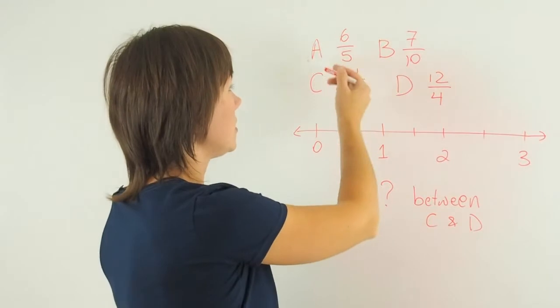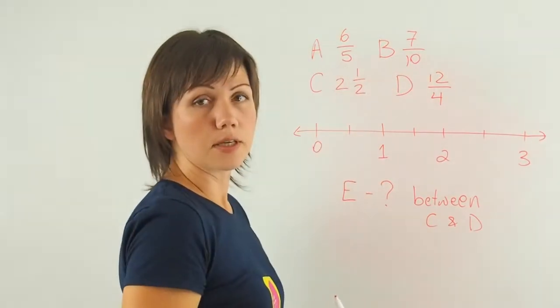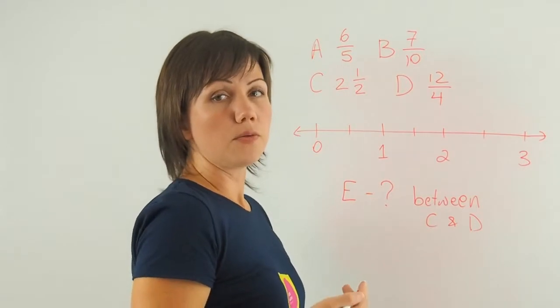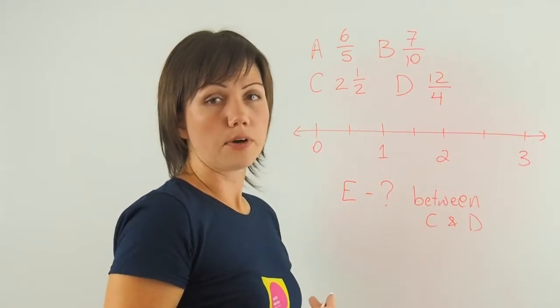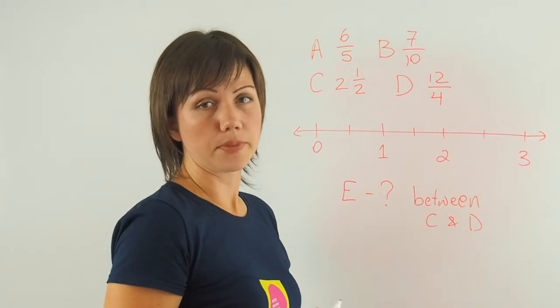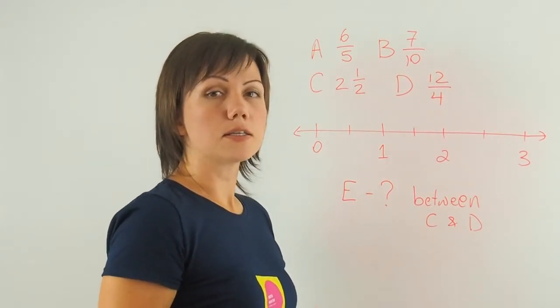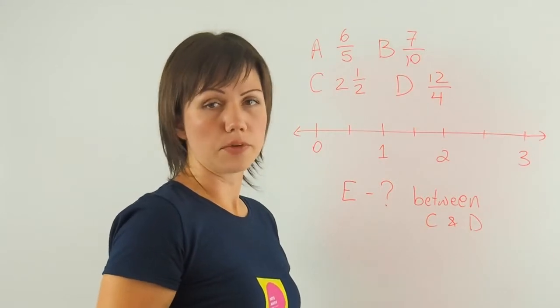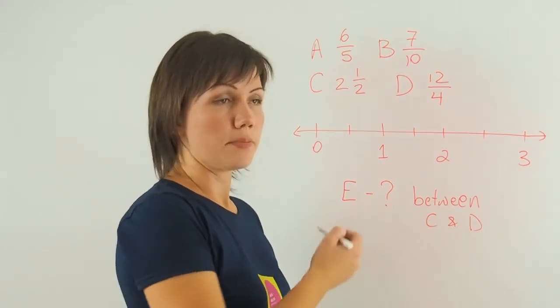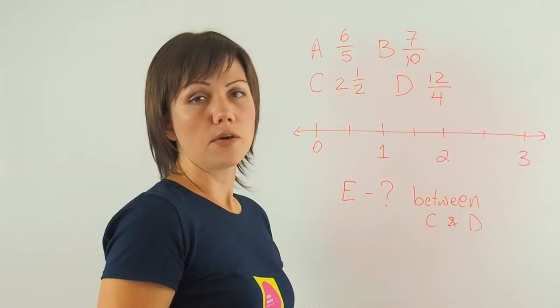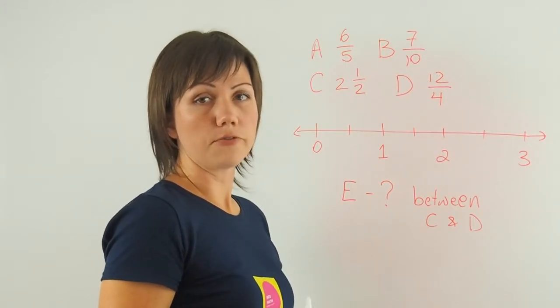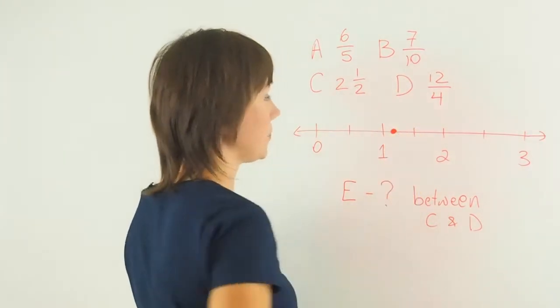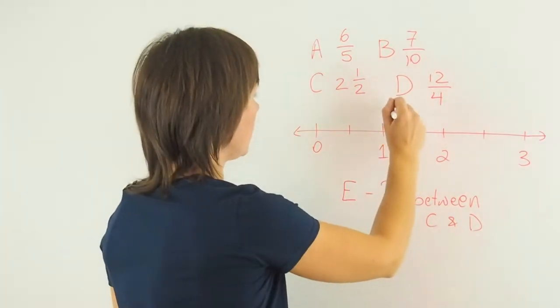Point A is 6 over 5. 6 over 5 is an improper fraction, which could be simplified and turned into a mixed number. If I divide 6 by 5, I'll get one whole and one remainder. So as a mixed number, this fraction is 1 and 1 fifth. So it would be located somewhere here. This is my point A.